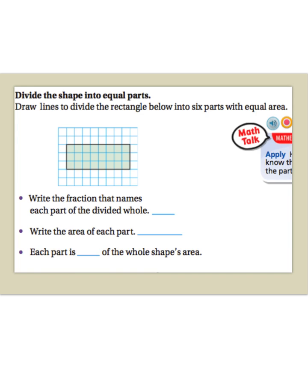Now, for this activity, we need to divide the shape into equal parts. We're going to draw lines to divide the rectangle below into 6 parts with equal area. Well, first of all, let's figure out how much is there. So, let's label our down and our over. So, our down, we have 1, 2, 3. And, our over, we have 1, 2... we have 8. So, for our total area, we have 24 square units.